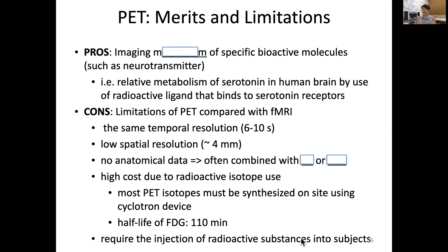In that case, we have limited use of our micro-PET because we order isotopes from a local hospital that has a cyclotron. There's a quick delivery service within several tens of minutes, but then we have only a limited time window to run the PET scan. That is a kind of limitation — however, it gives great metabolic information.